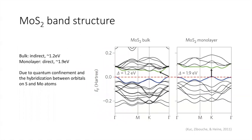Besides its layered structure, MoS₂ has attracted great interest due to its sizeable bandgap. In bulk form, the bandgap is about 1.2 eV and is indirect. As the number of layers is reduced, the bandgap increases gradually and reaches about 1.9 eV in monolayer, at which point it also becomes a direct bandgap. Here are two diagrams showing the energy bands of MoS₂ in bulk form and monolayer. The dashed red line indicates the Fermi level, the blue line represents the top of the valence band, and the green line highlights the bottom of the conduction band. The bandgap transition at the gamma point is indirect for bulk but gradually shifts to direct for the monolayer. The direct excitonic transitions at the K point remain relatively unchanged with layer number.